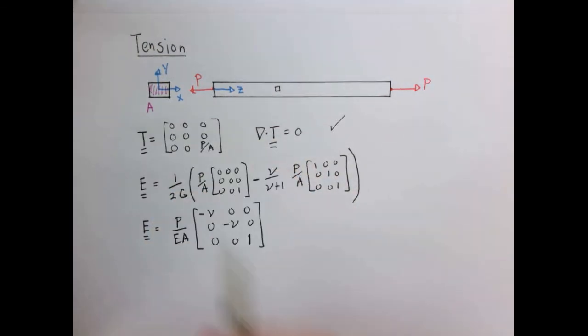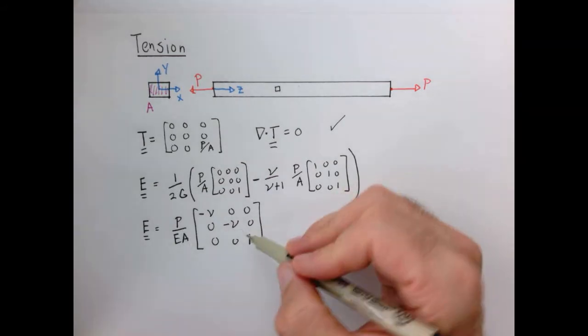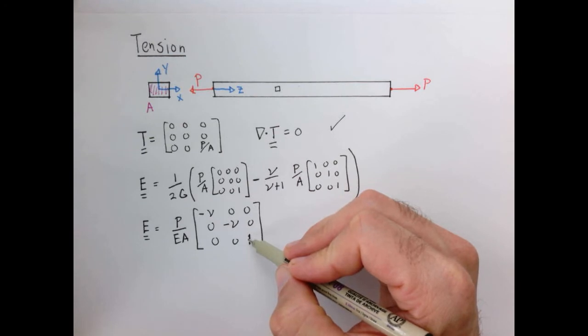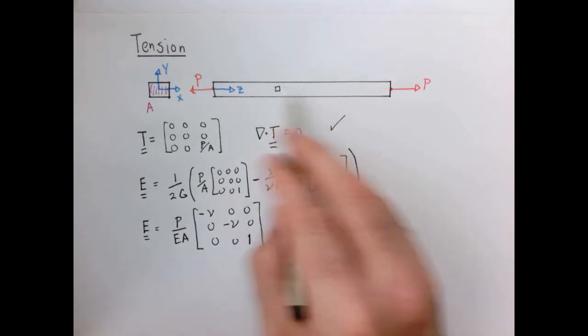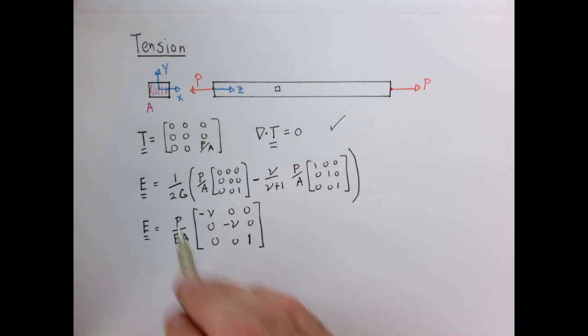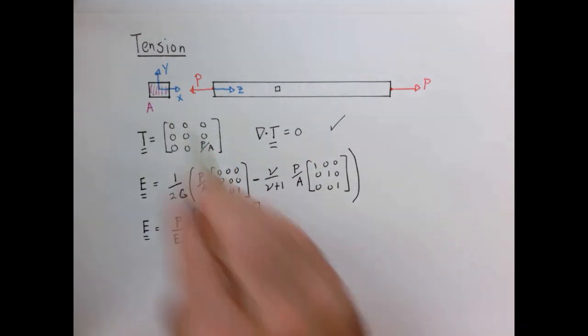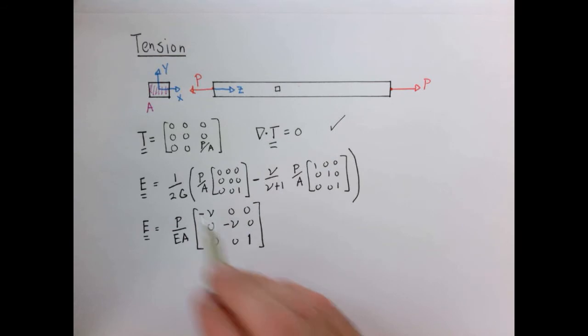So when we do a little bit of manipulation, we can rewrite our strain tensor in this form, where again, we only have axial strains. And in the Z direction, we have the strain just due to the stress sigma P over A, so the normal stress, just like we had before. And in the X and Y direction, so in the cross-sectional area, we have the Poisson ratio effect of the bar shrinking.